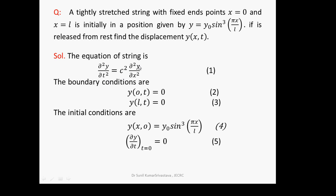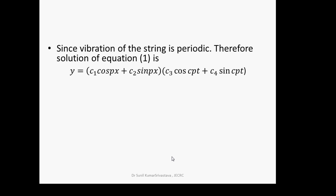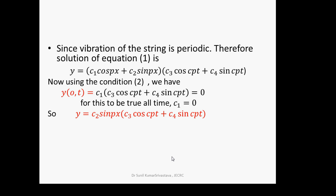We have two boundary conditions and two initial conditions. Boundary conditions: y(0, t) = 0 and y(l, t) = 0. Initial conditions: y(x, 0) = y₀ sin(qπx/l) and ∂y/∂t at t = 0 is 0, since the string is released from rest. Since vibration is periodic, the solution is y = (c₁cos(px) + c₂sin(px))(c₃cos(cpt) + c₄sin(cpt)).